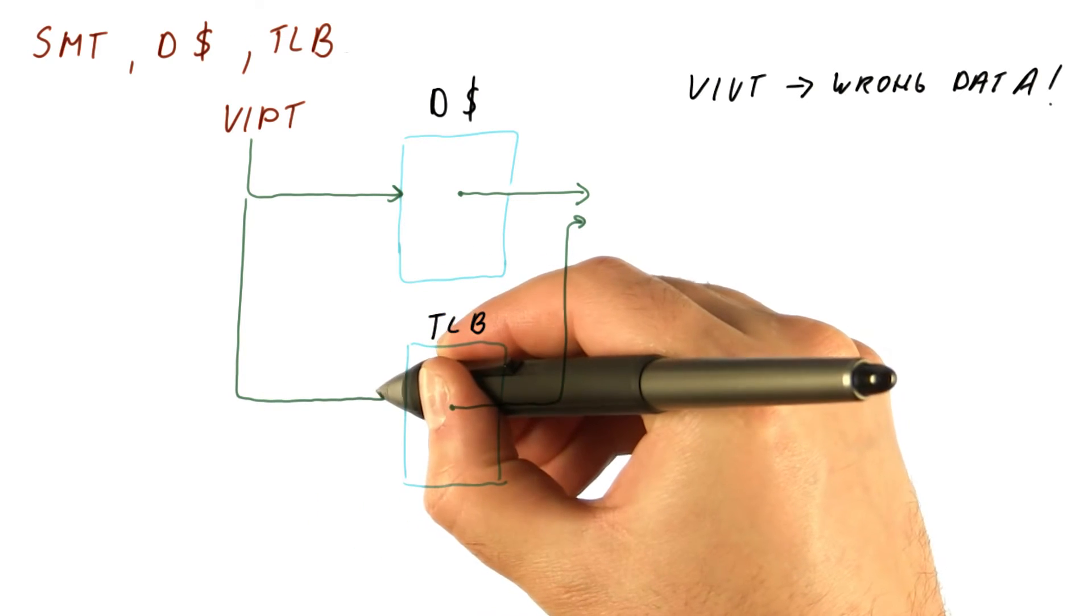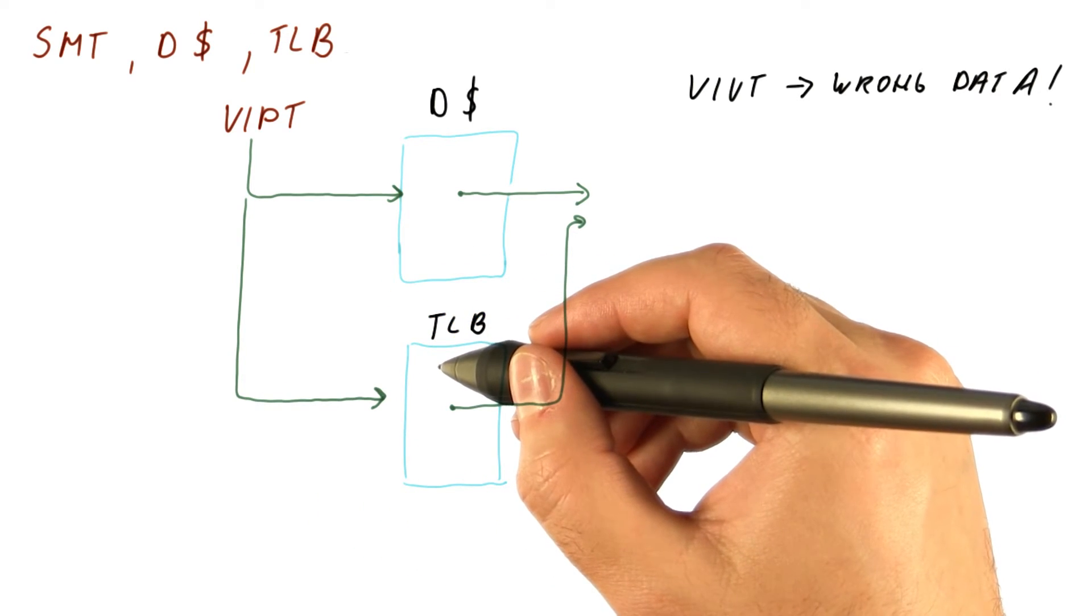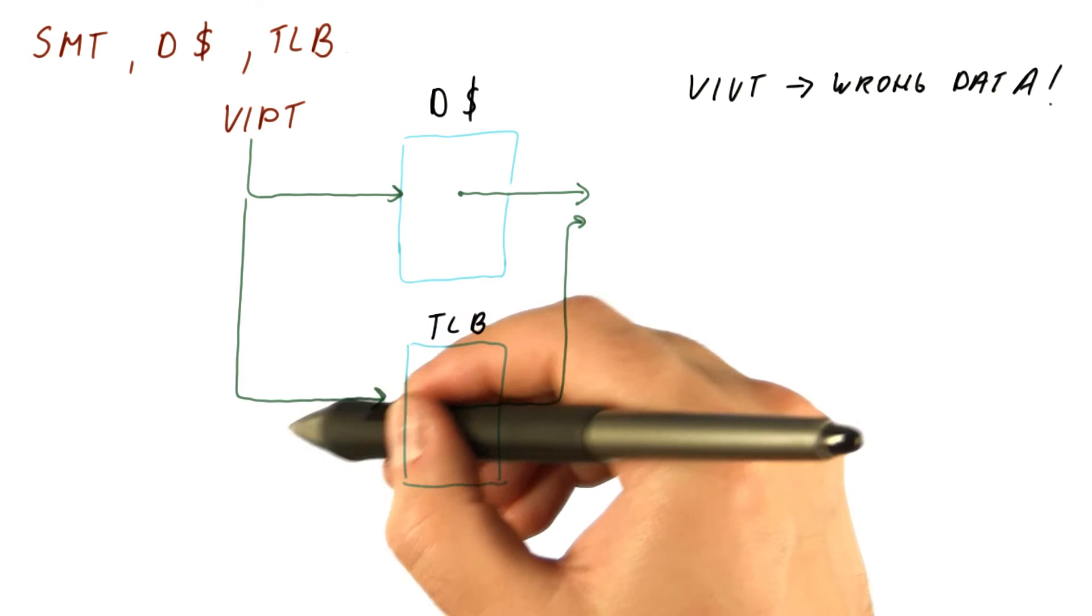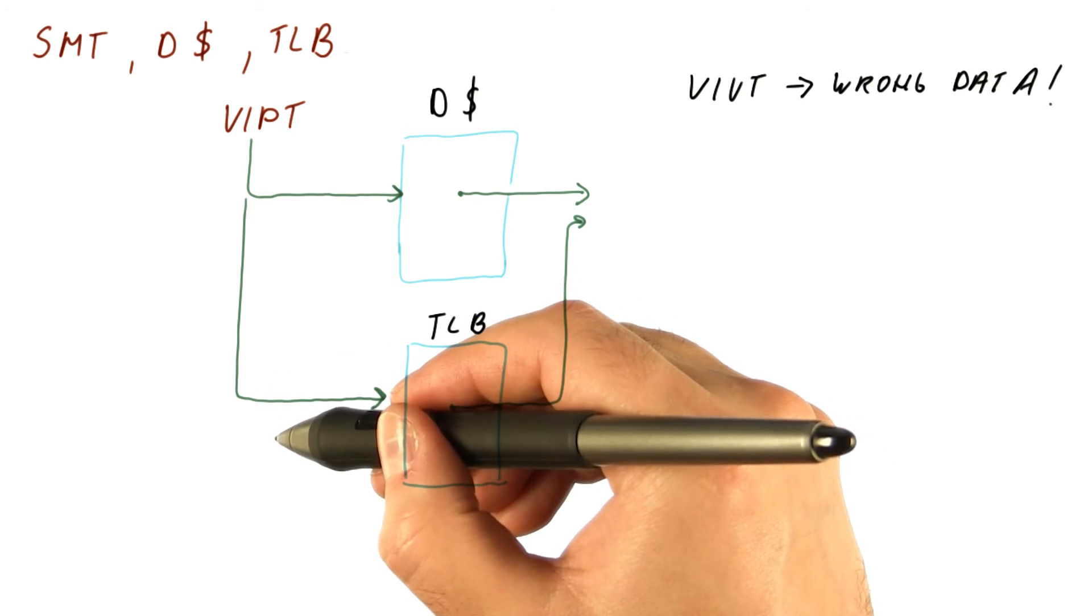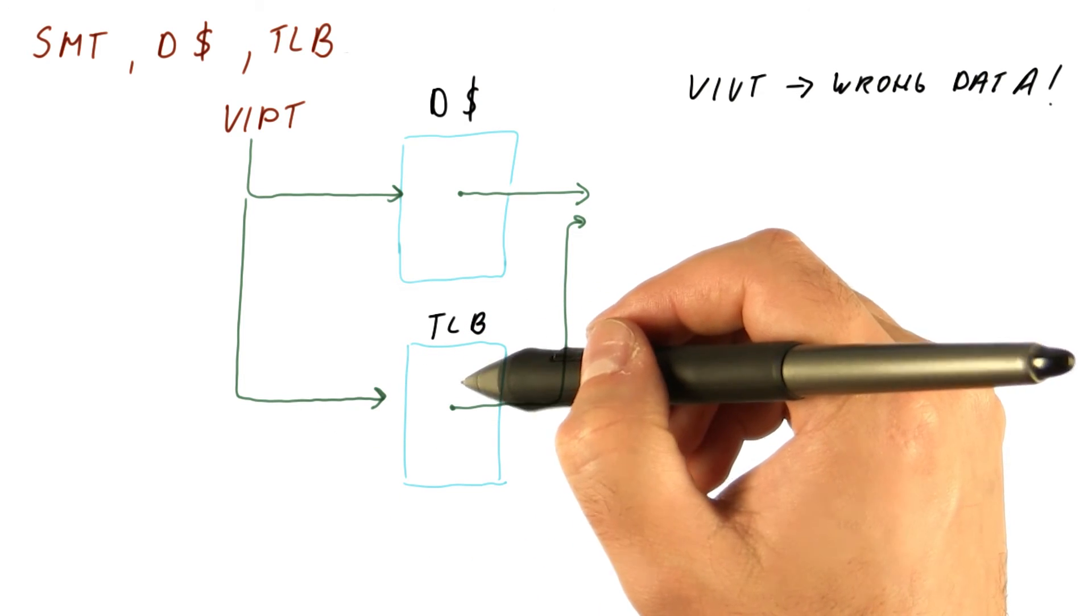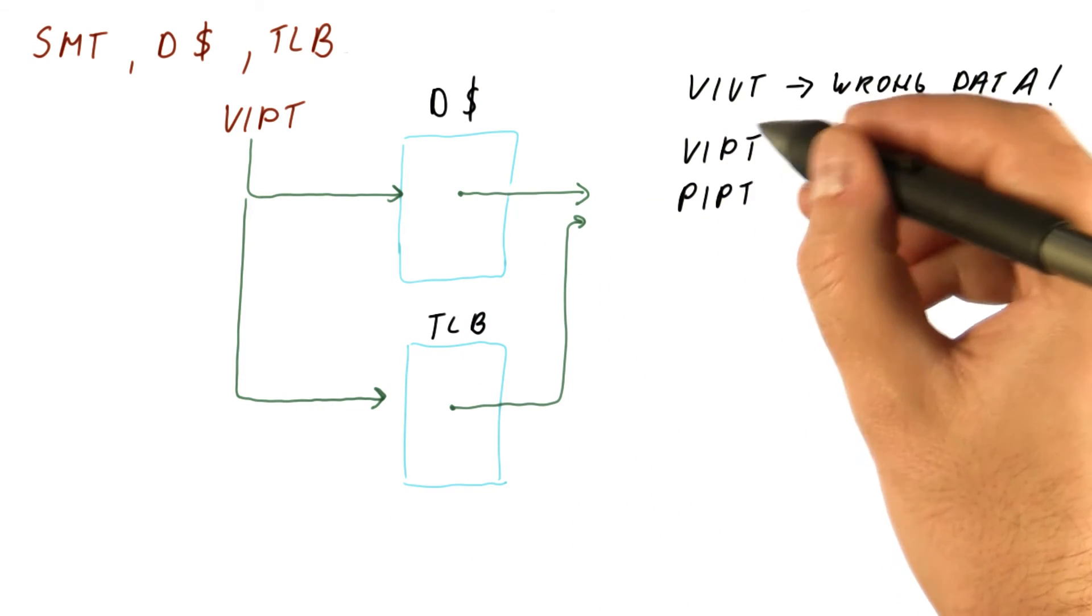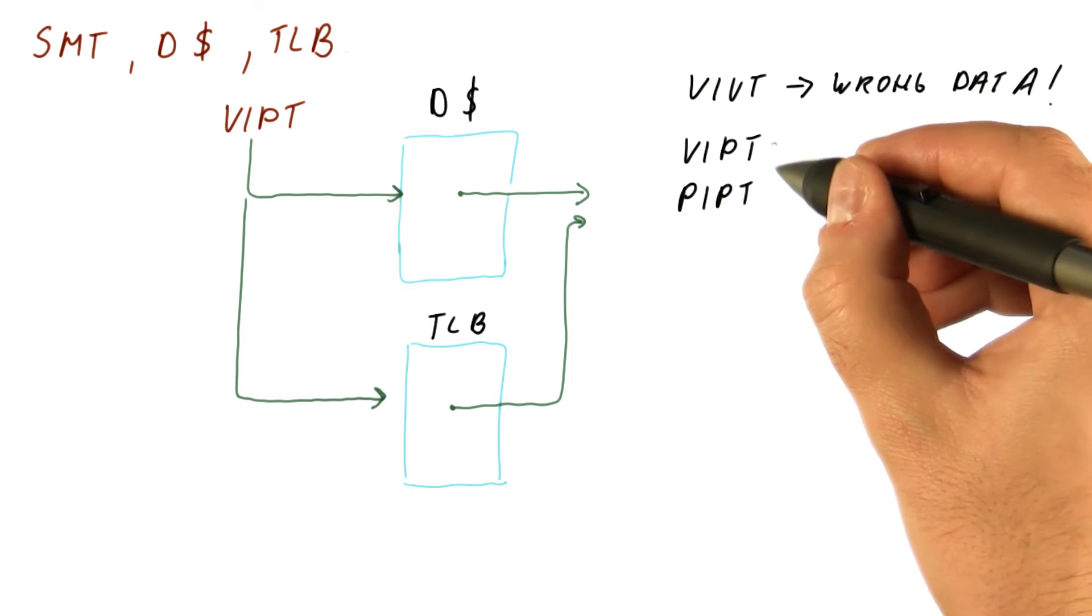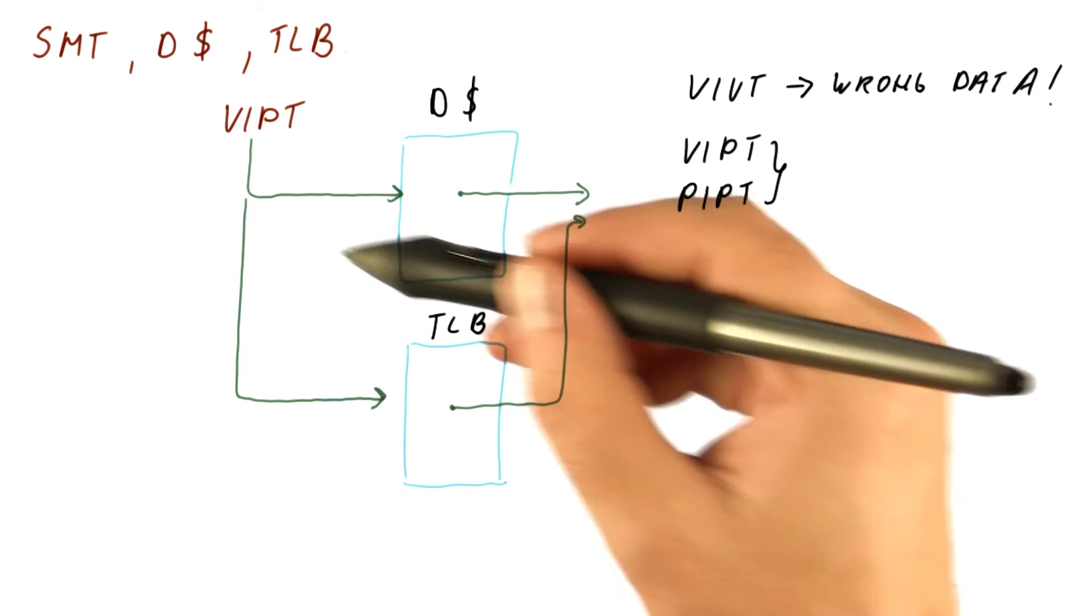However, that assumes that when we use the virtual address to access the TLB, it doesn't look at just the page number in the virtual address, because the two threads could have the same page number translate to different things. So for virtual indexed physically tagged or physical indexed physically tagged caches, the cache is just fine, but the TLB must be thread aware.